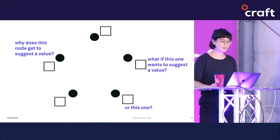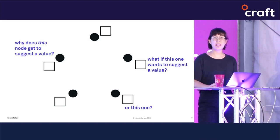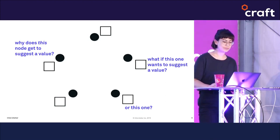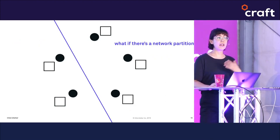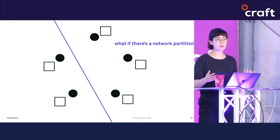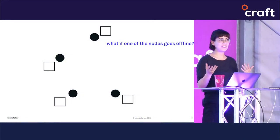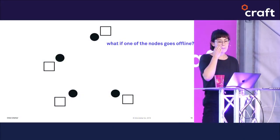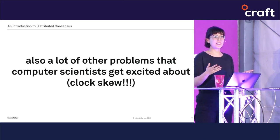For example, what if another node wants to suggest a value Y at the same time the first node is suggesting X? Or what if there's a network partition where some nodes can't reach one another? Or what if there are just a lot of nodes — it would take a really long time for any proposer node to reach out to every other node. Or what if one of the nodes goes offline and our proposer waits forever?